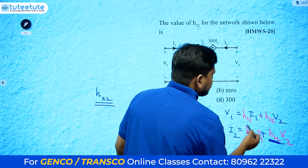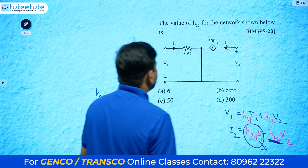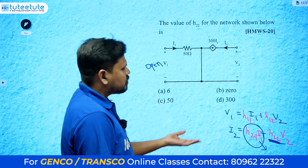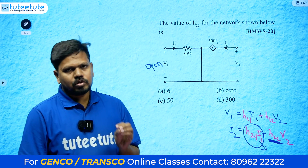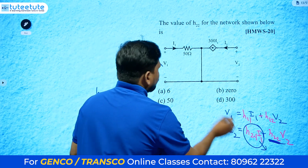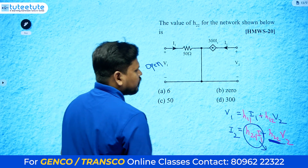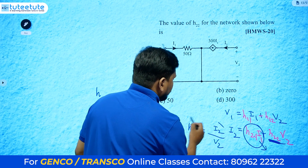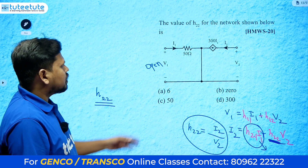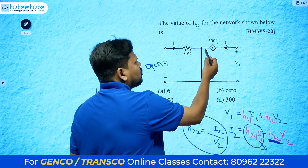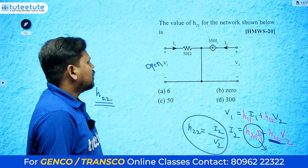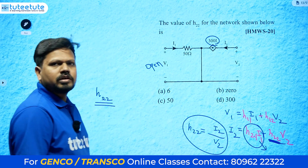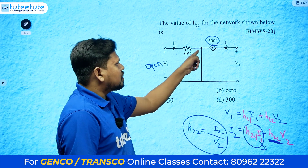They are asking about h22. In the equation, to find h22 we have to make the other term zero — so i1 equals 0, which means the input port is open circuit. Then h22 equals i2 divided by v2. Since i1 equals 0, the current going into the circuit is zero, so i1 equals 0 means the dependent current 300*i1 is also zero.